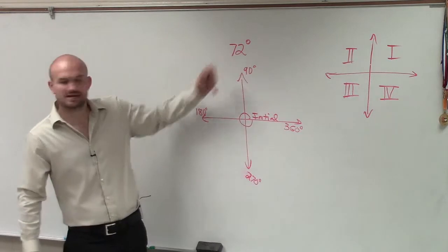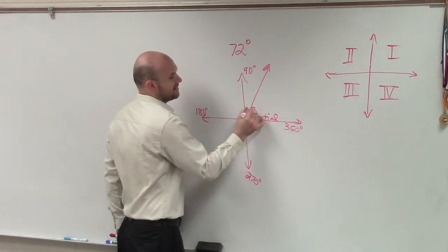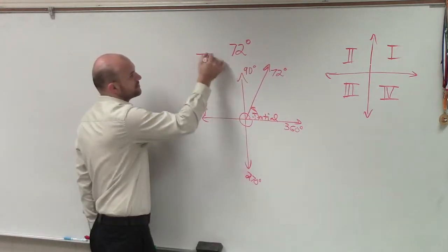So obviously, if I'm just rotating 72 degrees, that's going to look something like that, right? Therefore, you can determine that this is going to be in the first quadrant.